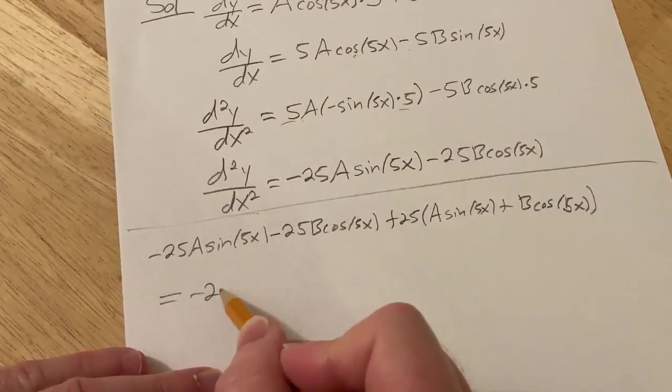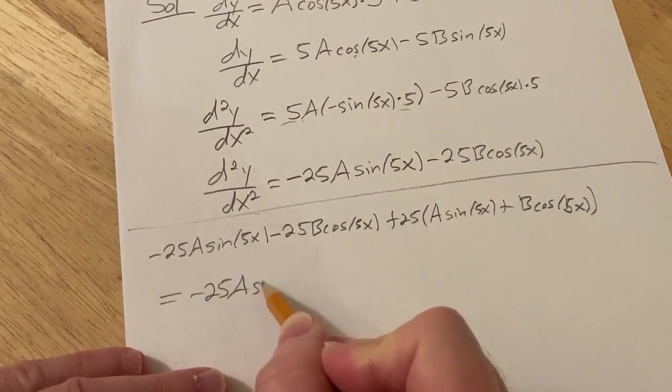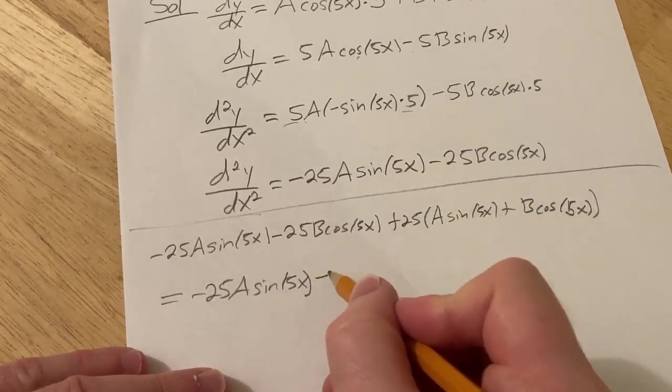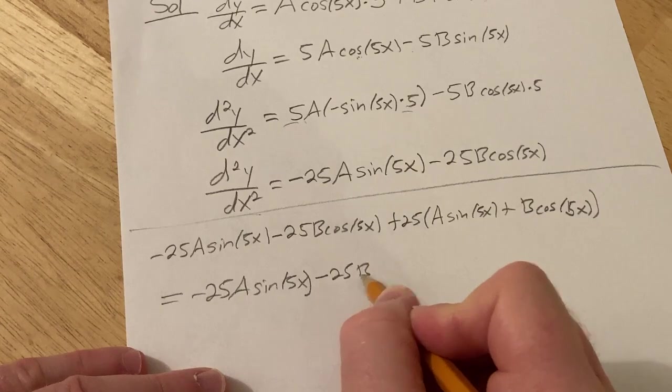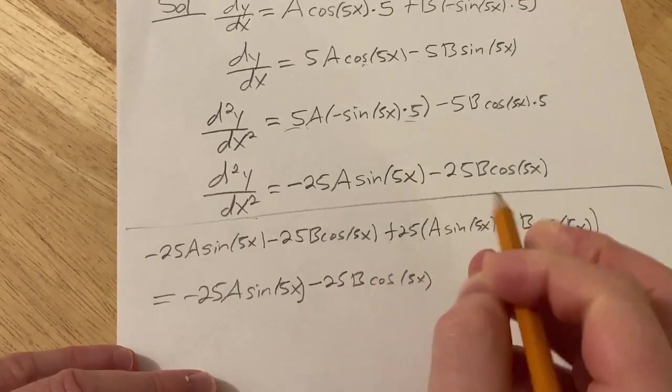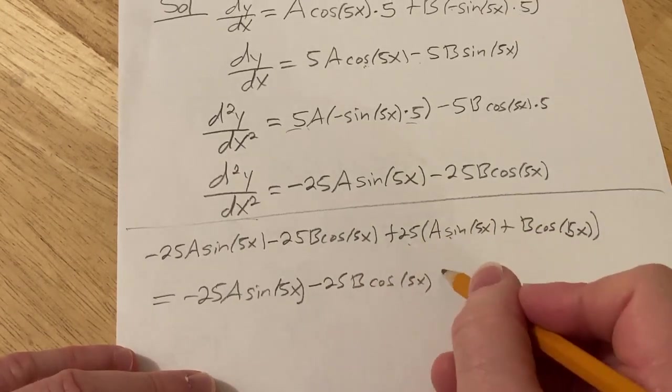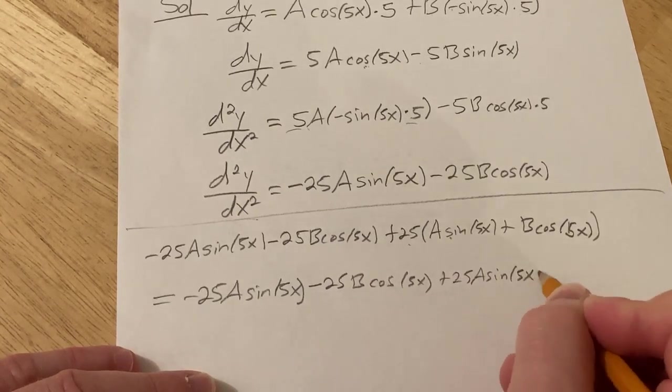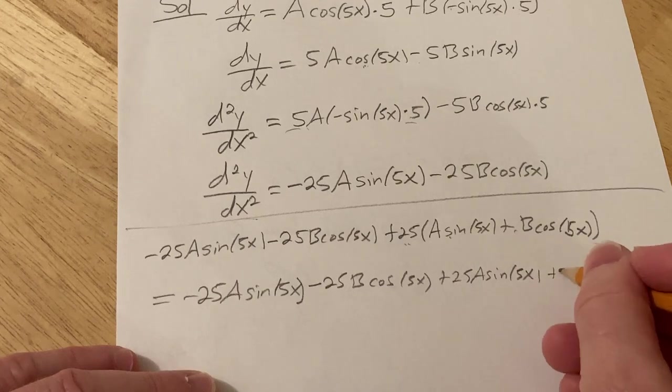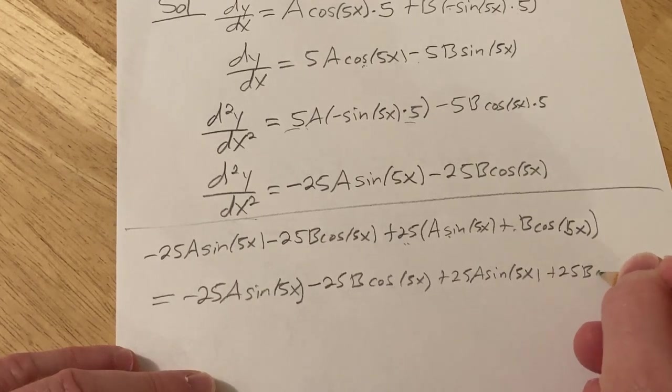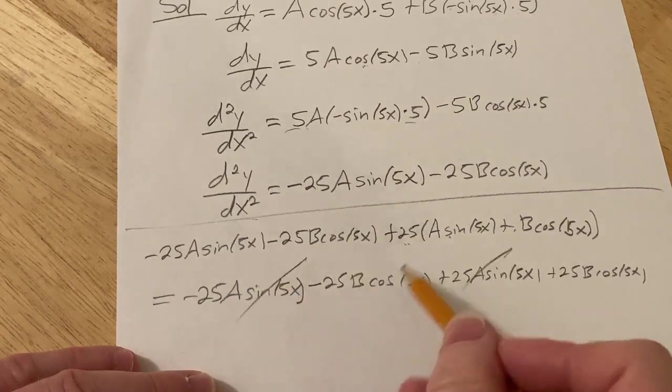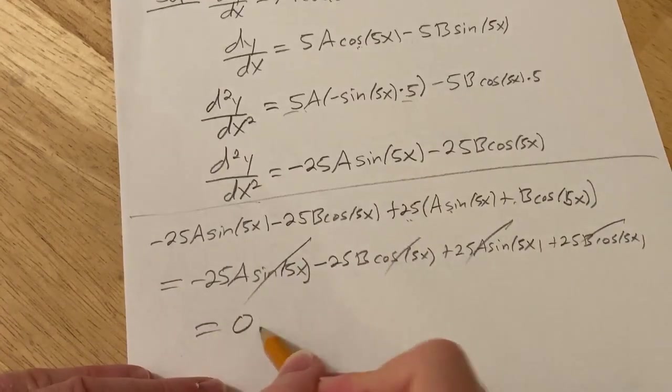So let's see, this is equal to negative 25A sine 5x. So plus 25A sine 5x. And then minus 25B cosine 5x. And then plus 25B cosine 5x. And look at this. These go away, these go away. So you get 0. So it checks.